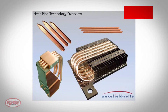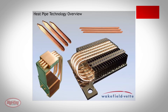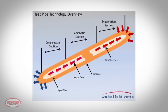Heat pipes are a transport mechanism used to move heat from the heat source to an area where the heat can be dissipated. Heat pipes do not actually dissipate the heat. Rather, they are integrated into various different types of heat sink solutions. The heat pipe is a copper tube with an internal wick structure that is sealed on both ends with a small amount of water inside.